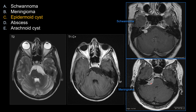Meningioma, on the other hand, as shown in this biopsy-proven case, can also extend into the fundus of the internal auditory canal, but that is not the dominant feature. Usually the lesion is quite big at that point. Normally it does not extend quite deeply, but you should see a larger base within the CPA, and in this case you can see the classic appearance of a dural tail. Between these two lesions, you should have no difficulty differentiating meningioma from schwannoma.